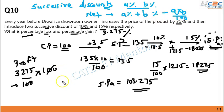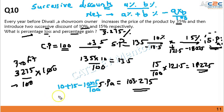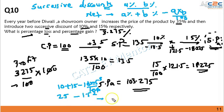Substituting the values: −10 and −15, we get: −10 + (−15) − (−10 × −15)/100 = −25 + 1.5 = −23.5. So there is a net discount of 23.5% on the 135 rupees selling price.